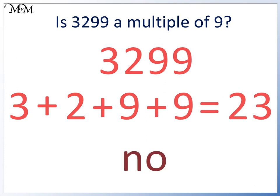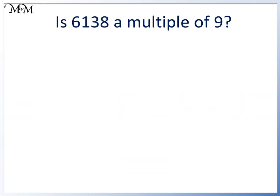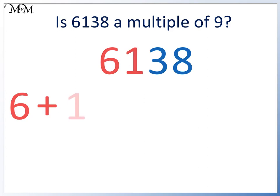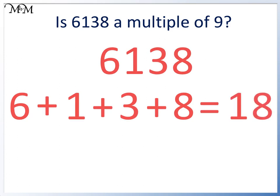Is 6,138 a multiple of 9? We add the digits 6 plus 1 plus 3 plus 8 equals 18. 18 equals 2 times 9, so yes, 6,138 is a multiple of 9.